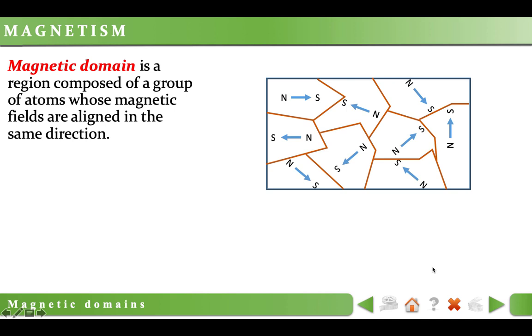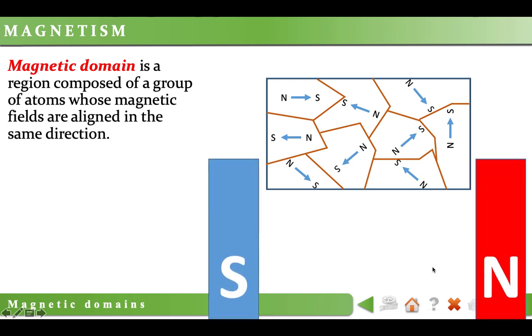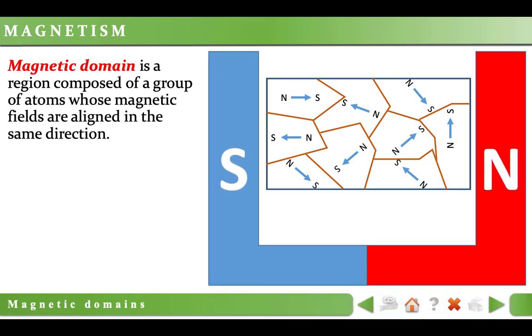In an unmagnetized substance, the domains are randomly oriented. When an external magnetic field is applied, the orientation of the magnetic fields of each domain may change slightly to more closely align with the external magnetic field. This alignment enhances the applied magnetic field. Magnetic domain is a region composed of a group of atoms whose magnetic fields are aligned in the same direction.